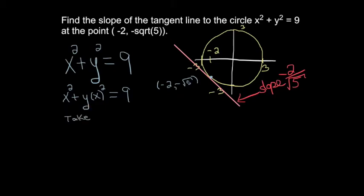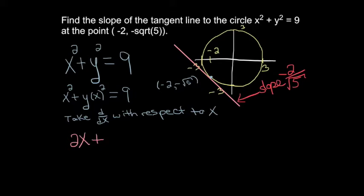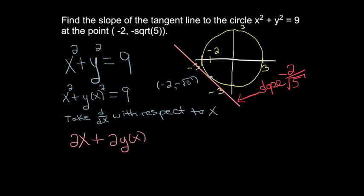Let's take the derivative of both sides with respect to x. The derivative of x squared is 2x. The second part is a composition of functions — there's a square on the outside and a function of x on the inside. Taking the derivative of the outside first gives 2 times y, decreasing the power to 1. Then multiply times the derivative of the inside. The derivative of 9 is 0.